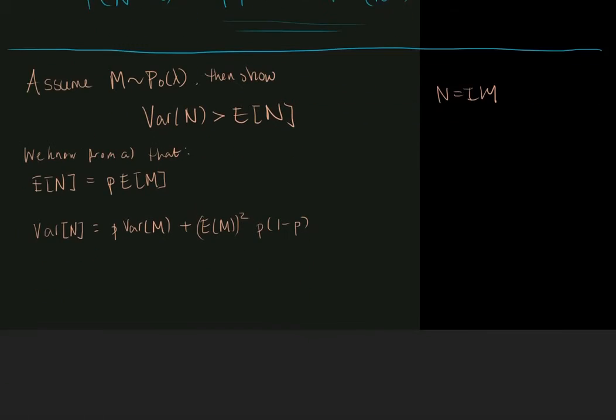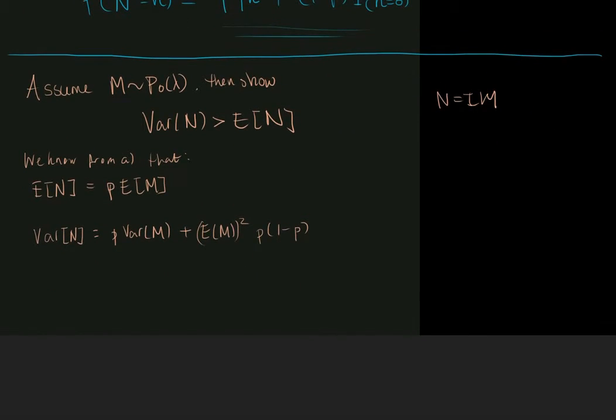Now let's recall, when m is Poisson distributed, what does that mean? Well, for a Poisson distributed random variable, the mean and the variance of that variable are both equal to the parameter lambda. This means that the mean of n equals p lambda, whereas the variance of n equals p lambda plus lambda squared p times 1 minus p.